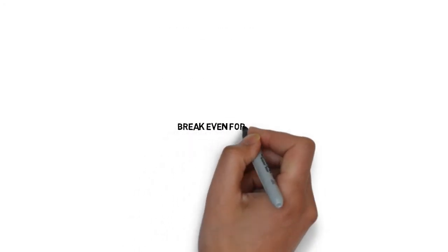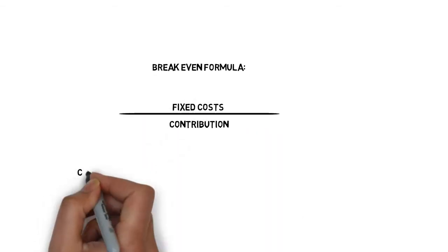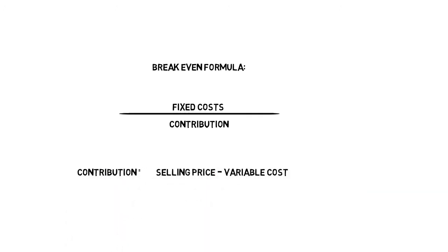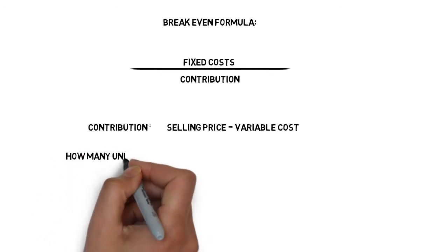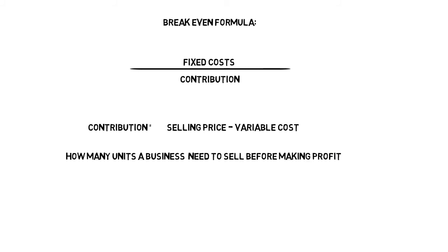You need to know the break-even formula. This is fixed costs divided by contribution. Contribution is worked out as selling price minus variable costs. The break-even formula shows how many units a business needs to sell before it's making a profit.